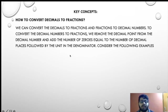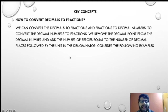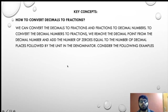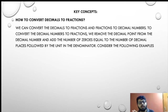We can convert the decimal to fraction and fraction to decimal. To convert decimal numbers to fractions, we remove the decimal point and add the number of zeros equal to the number of decimal places in the denominator. We keep the equal number of zeros that are there after the point.